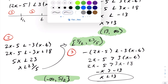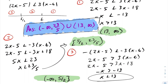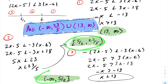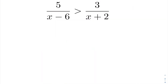Combining all three solution sets, the final answer is negative infinity to 23 over five, union 13 to infinity. We get this by taking the interval from 13 to infinity and combining the other two intervals, which together form the complete interval up to 23 over five. Now let's look at another example.